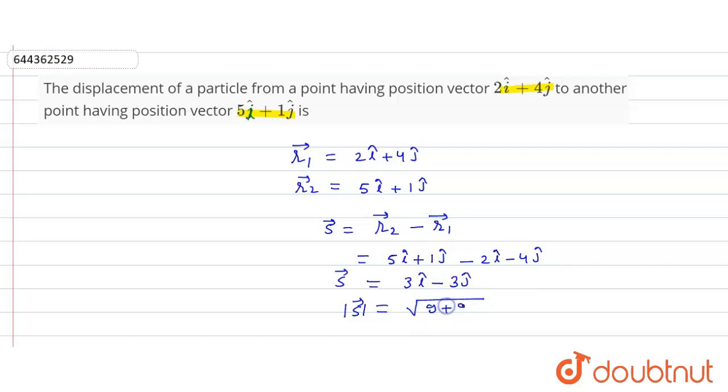So the magnitude of this displacement vector will be square root of 9 plus 9, that is equal to square root of 18 units. So this will be the displacement.